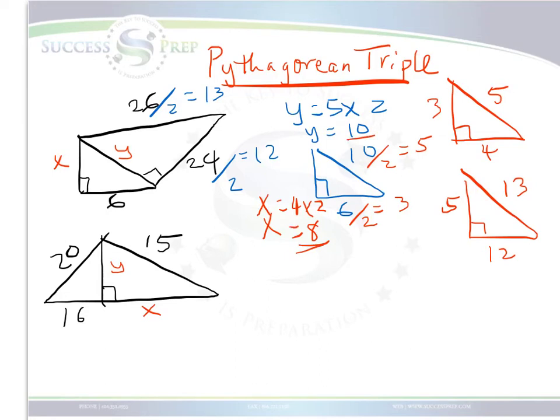We can solve the triangle down here using the same concept. Looking at, for example, we start with 20, 16, trying to find this Y. We recognize that 20 and 16 have something in common. So again, we use the same concept.